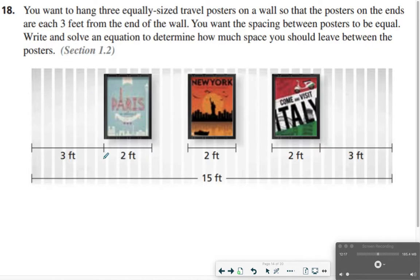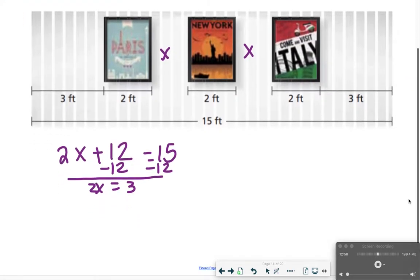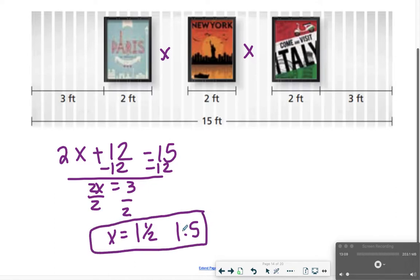18 was kind of tricky. You want to hang 3 equally sized travel posters on a wall that's equal to 15 feet long. If you want equal amount of space in between, and there's 3 feet taken away on each side, I'm going to go ahead and say that there is 12 feet left over. And then for this one as well, think about there is two spaces. We want that to be evenly spaced, so that's 2X plus the remaining 12 feet should be equal to 15. I'm going to go ahead and subtract 12 from both sides. So I get 2X is equal to 3. And then divide by 2, X is equal to 3 halves, or you could say 1 and 1 half, or 1.5.